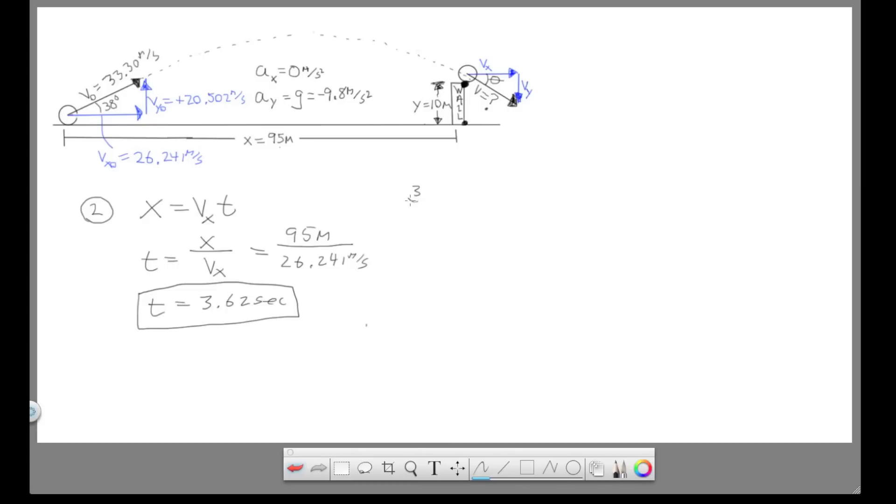So this takes us to number 3, the last question. Finding the velocity of the ball as it passes over the wall. So we want to find this velocity vector right here, where my cursor is pointing. This black vector. Now, we're going to be focusing here. We already know what Vx is. Vx never changes. It's 26.241 meter per second. And we need to solve for Vy, which is not difficult because we now have the time to this point. So finding Vy, the y velocity as the ball passes over the wall, we'll call that Vy final, with over here being Vy initial. So the kinematic that's going to do this is Vy final equals Vy initial plus Gt.